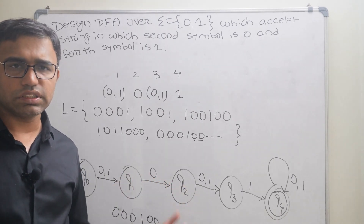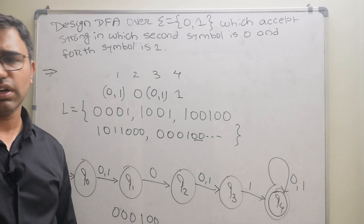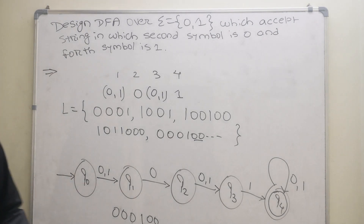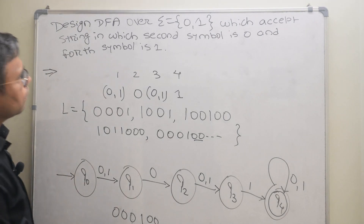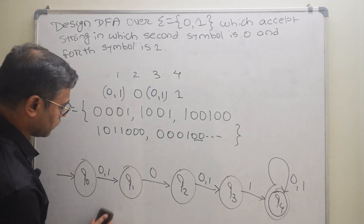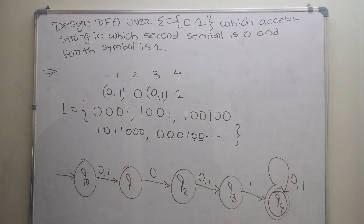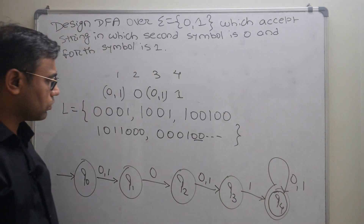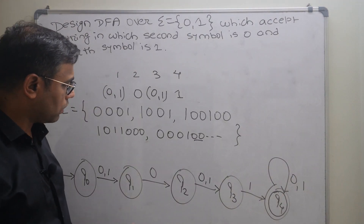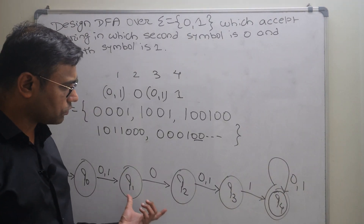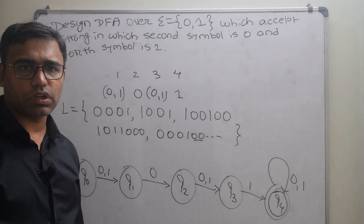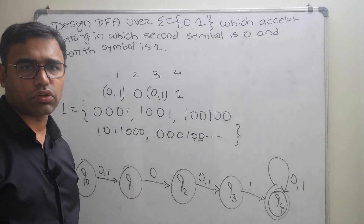So that's it for this video — the DFA accepts strings in which the second symbol is 0 and the fourth symbol is 1. I do hope you understand this automata.